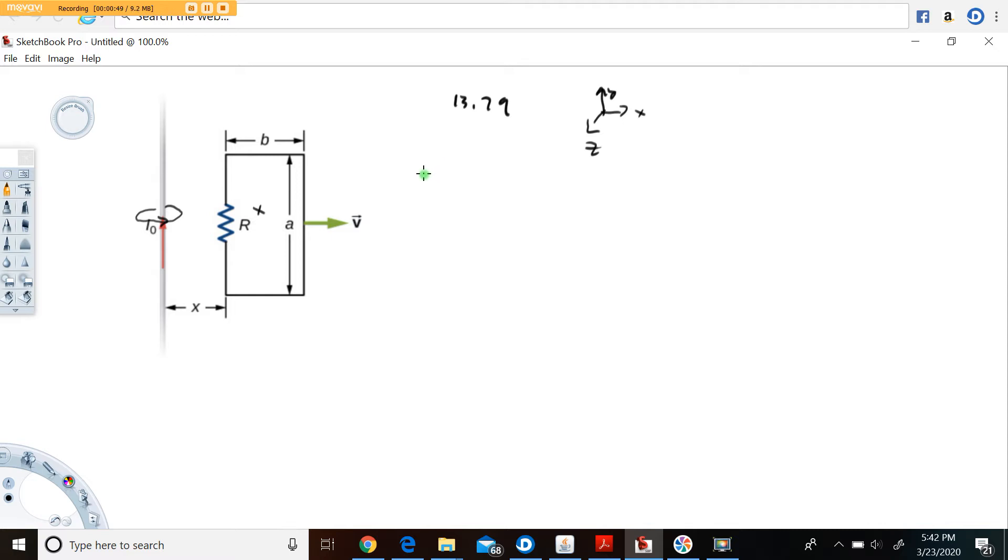First, there is a magnetic flux through this cross-sectional area here because of the magnetic field created by the wire. Second, that magnetic flux is decreasing because as this wire moves to the right, it's moving towards regions with less magnetic field strength.